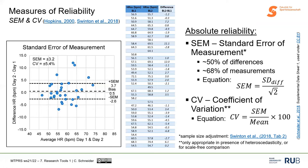Another very common measure in sports science is expressing SEM as a coefficient of variation (CV). A CV is always a percentage value — some type of variability expressed in percent. In terms of reliability, the CV is most often the SEM expressed as a percentage. In this case, 3 bpm resting heart rate SEM equals approximately 5% day-to-day variation. To calculate: take the SEM, divide by the average heart rate, and you get a percentage value.